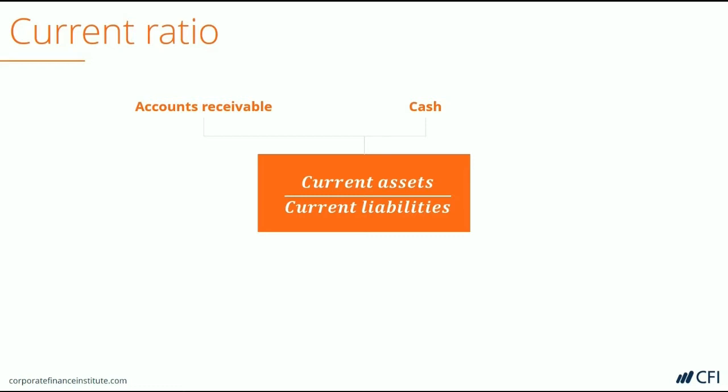The next most liquid item on the balance sheet is typically inventory. Inventory can vary widely by industry and company type — from inventory that can be sold very quickly, almost at its full value, to inventory that's slow moving, and if liquidated, may have to be sold at a steeper discount.